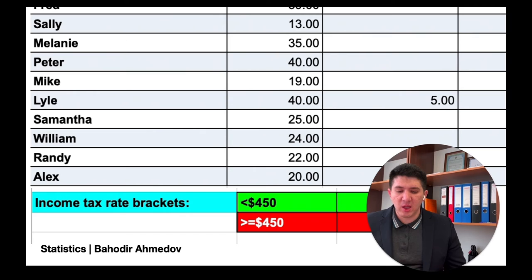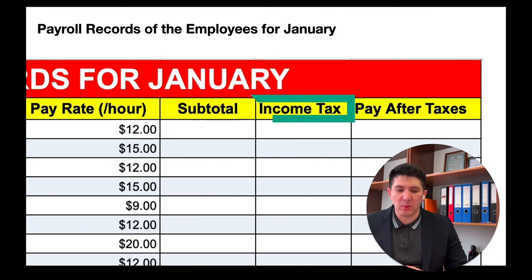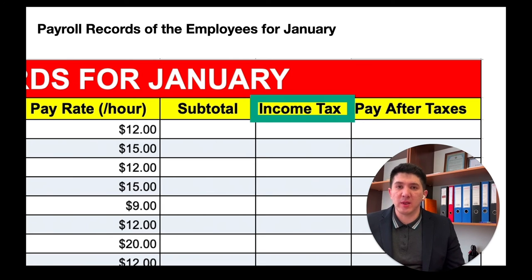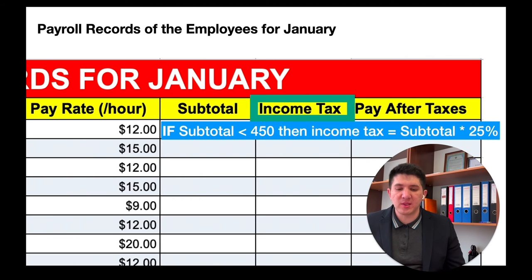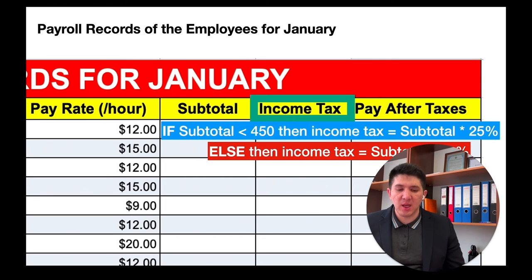If the subtotal is less than $450, the tax rate is going to be 25%. If the subtotal is more than or equal to $450, we are going to calculate the income tax at a rate of 30%. This will be implemented in the income tax column using the IF command: if the subtotal is less than 450, multiply by 25%; otherwise multiply by 30%.